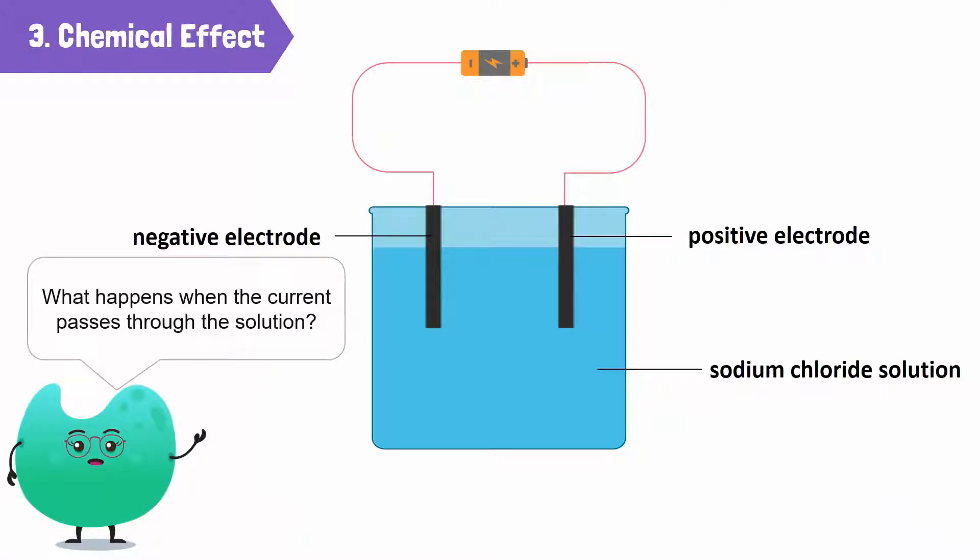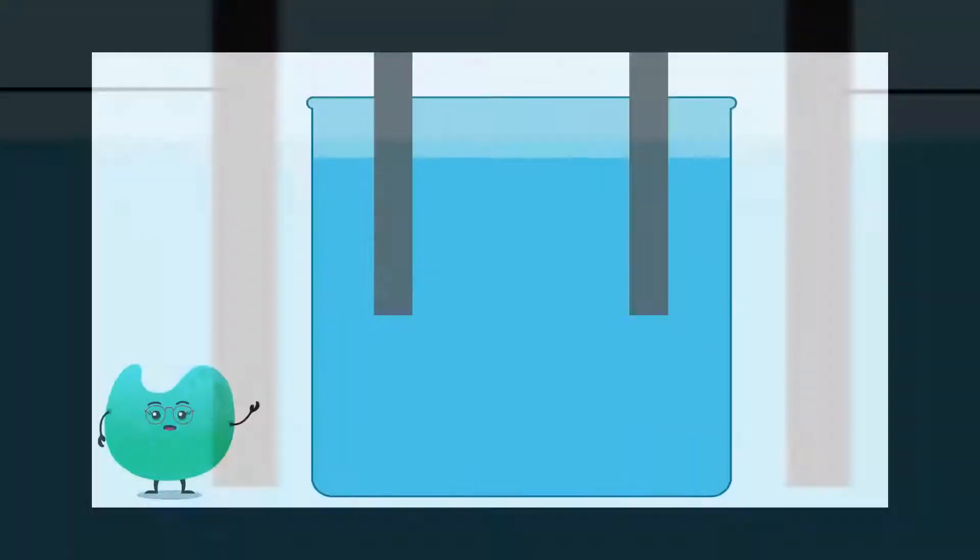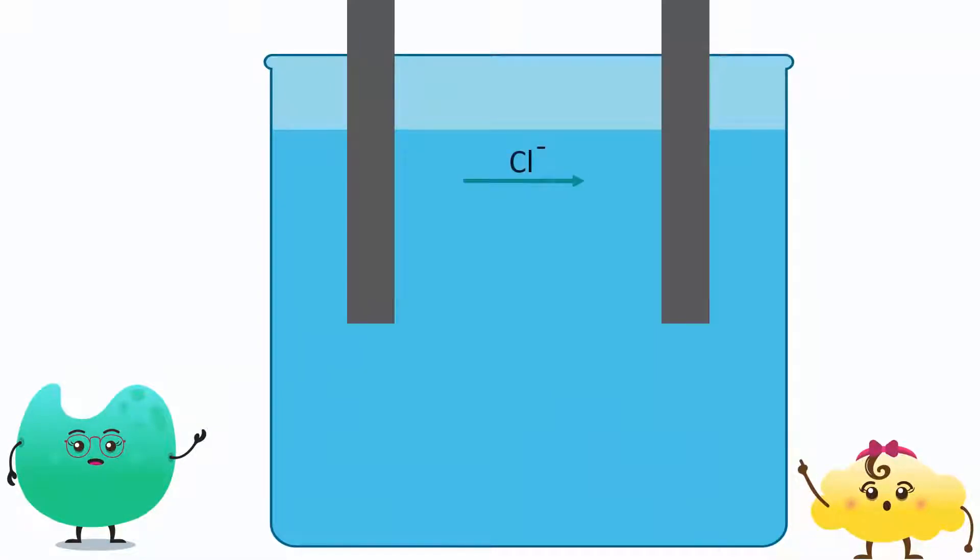Now, observe what happens when current passes through the solution. Chlorine gas is collected through the positive electrode.